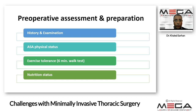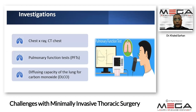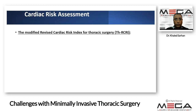The preoperative assessment and preparation for patients undergoing video-assisted thoracoscopy - Dr. Amr has discussed this in depth, but to revise: we start with history and examination, then ASA physical status, exercise tolerance using the six-minute walk test, and assessment of nutritional status. Investigations usually required include chest x-ray, CT chest especially in patients undergoing lung reduction surgeries, pulmonary function test, and the diffusion capacity for carbon monoxide.